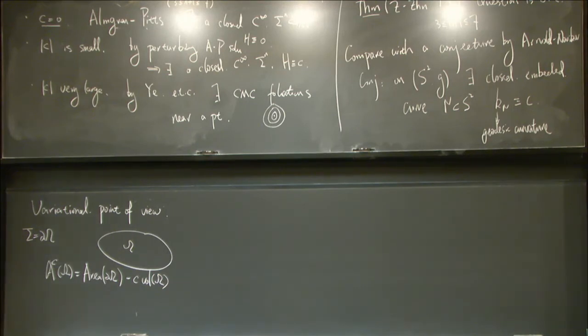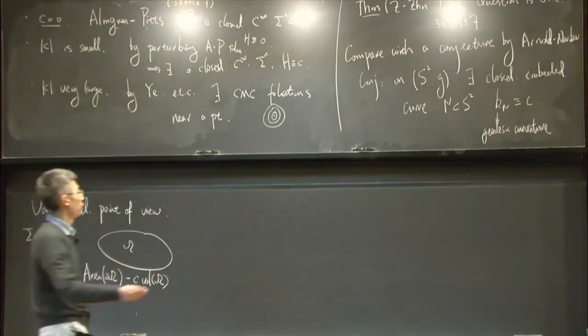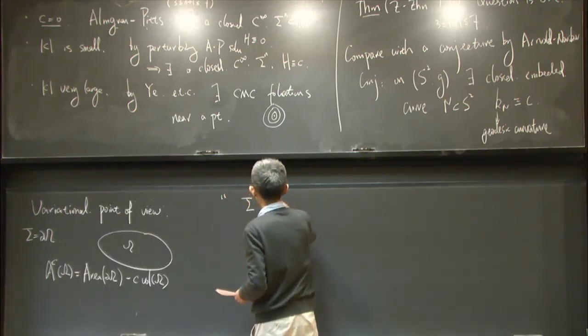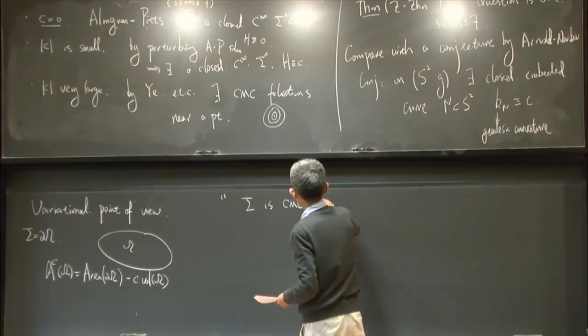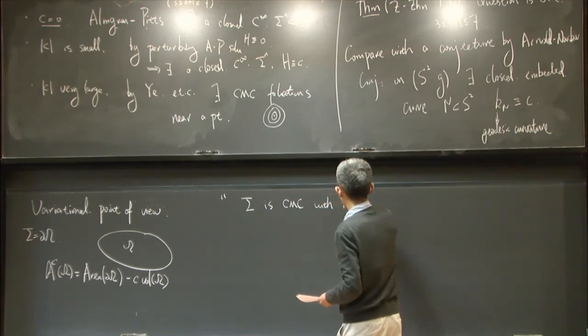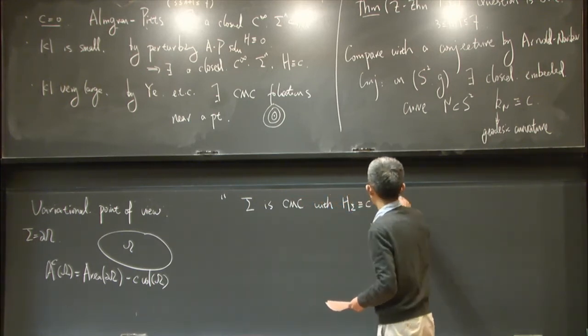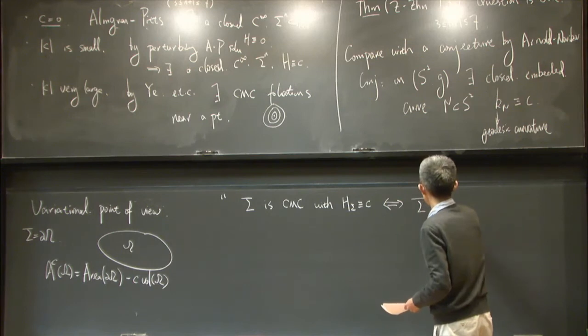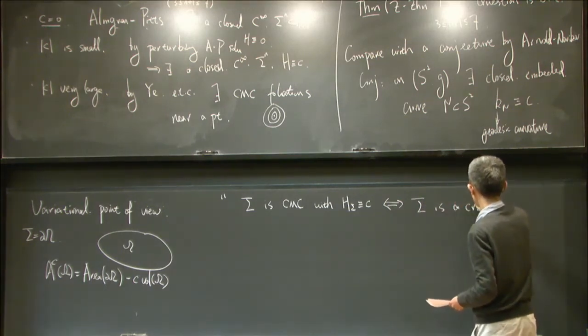One can see that if I redo my first variation formula for this functional, the simple result is that sigma is CMC, this mean curvature identical to C, if and only if sigma is a critical point for this new functional.